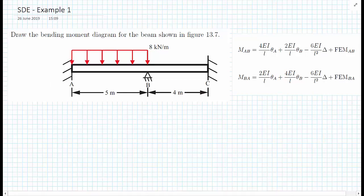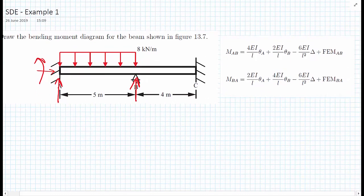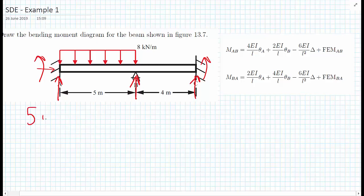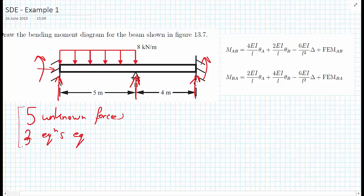Looking at the beam, we have an unknown vertical reaction at A, a moment reaction at A, and a vertical reaction at B. At C, we have a vertical reaction, a moment reaction, and a potential horizontal reaction. So we have 5 unknown forces and only 3 equations of equilibrium. This is an indeterminate system. Using a force-based approach, we would need to find two unknown forces. Instead, we're using a displacement-based approach — the slope deflection equation.